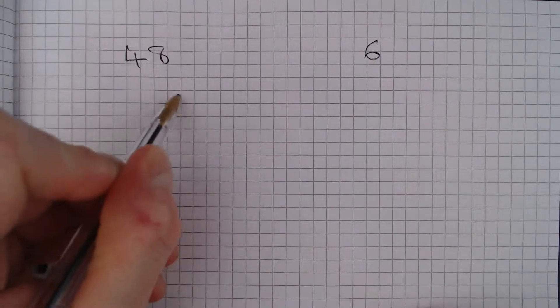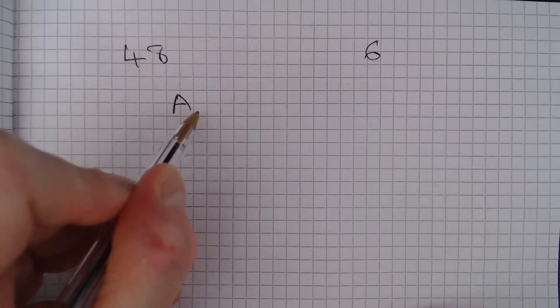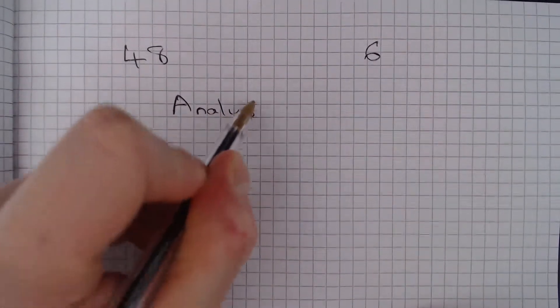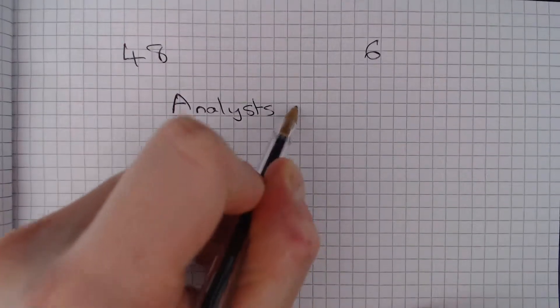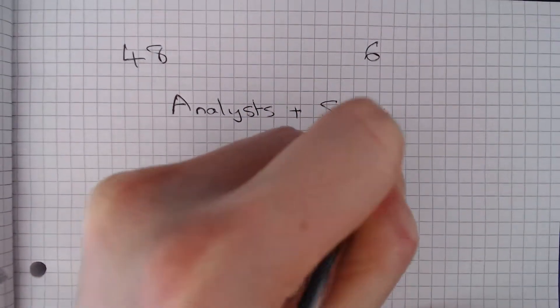The total number of people in the office is the number of analysts plus the number of supervisors.